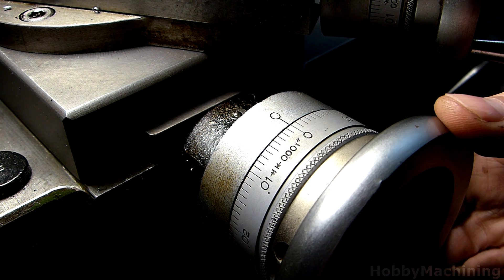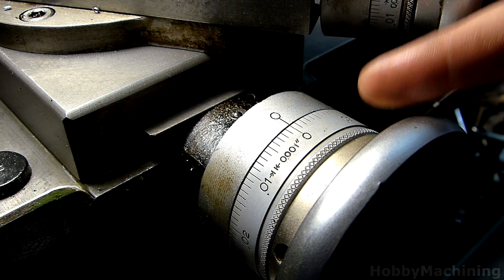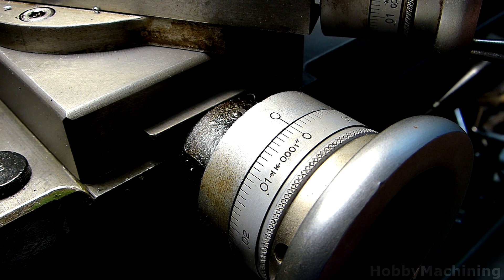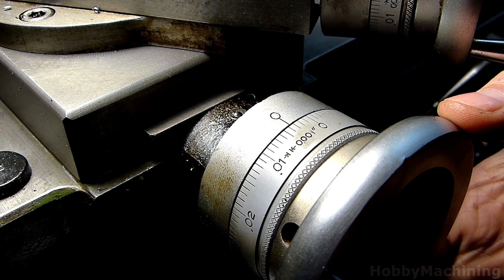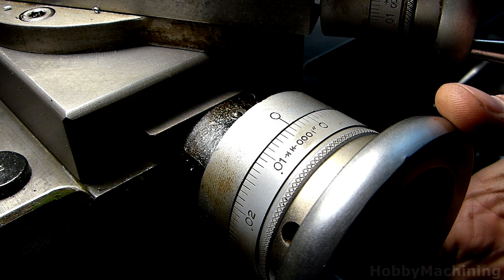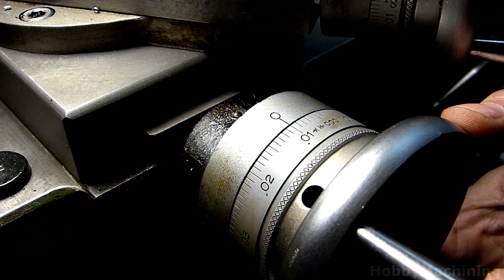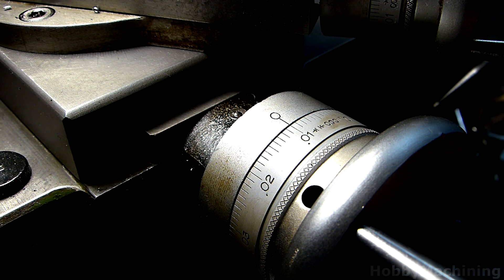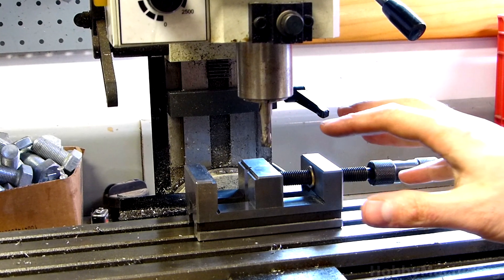Now, if we started here, and I just turned in the opposite direction, and we tried to cut ten-thousandths, well, we just lost four-thousandths to backlash, and our cut is now only six-thousandths.